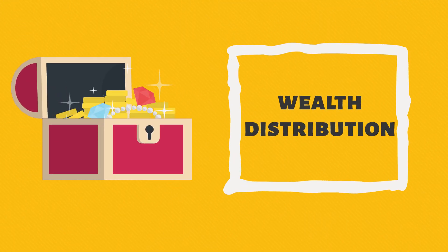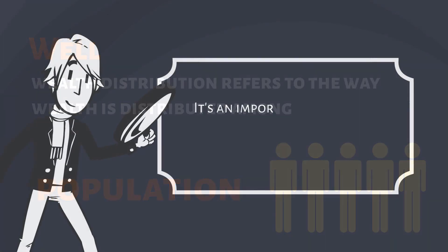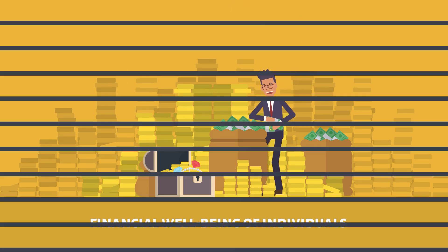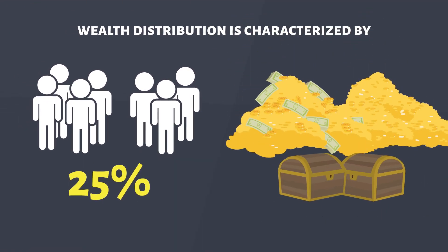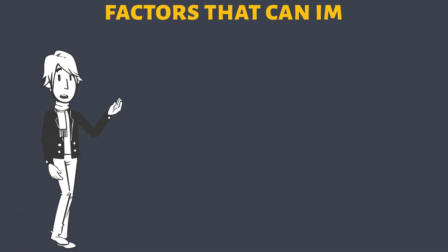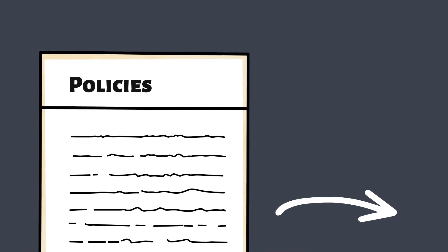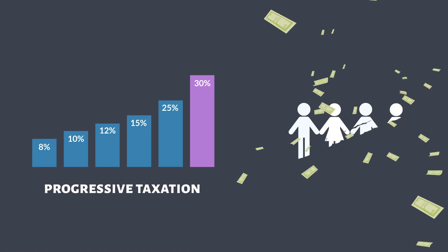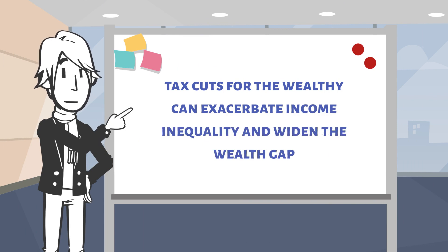Now let's dive into the topic of wealth distribution. Wealth distribution refers to the way wealth is distributed among the population. It's an important concept to understand, as it can provide valuable insight into the state of the economy and the financial well-being of individuals. In general, wealth distribution is characterized by a small percentage of the population holding a large proportion of the wealth, while the majority of the population holds relatively little. There are many factors that can impact wealth distribution, including macroeconomic trends, government policies, and demographics. For example, government policies aimed at reducing income inequality, such as progressive taxation, can help to distribute wealth more evenly. On the other hand, tax cuts for the wealthy can exacerbate income inequality and widen the wealth gap.